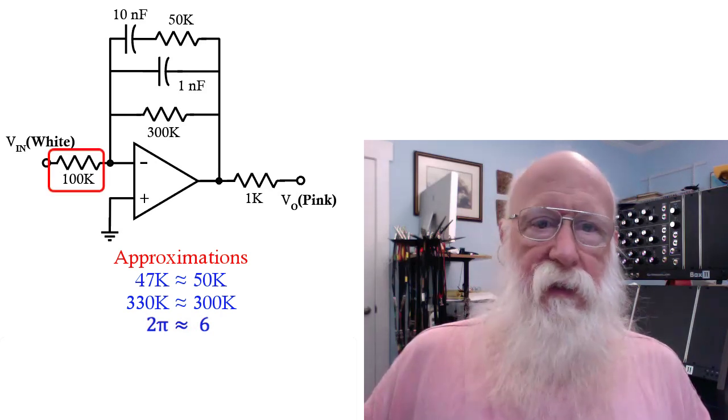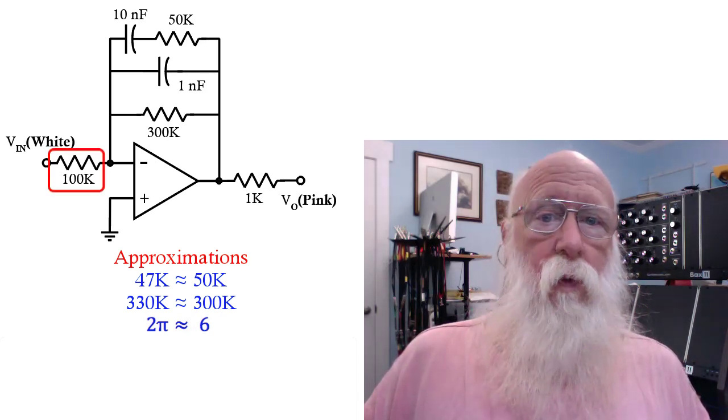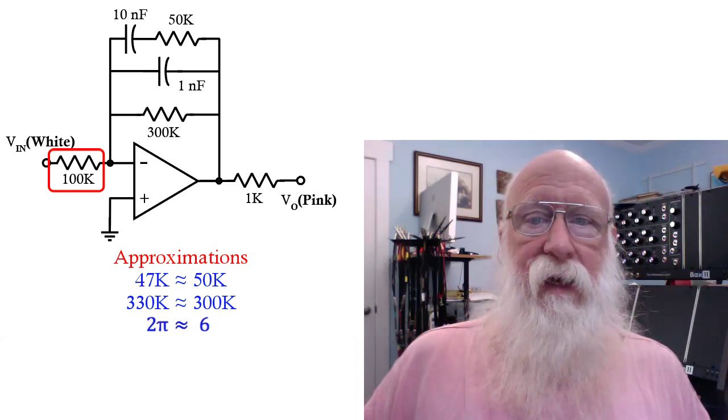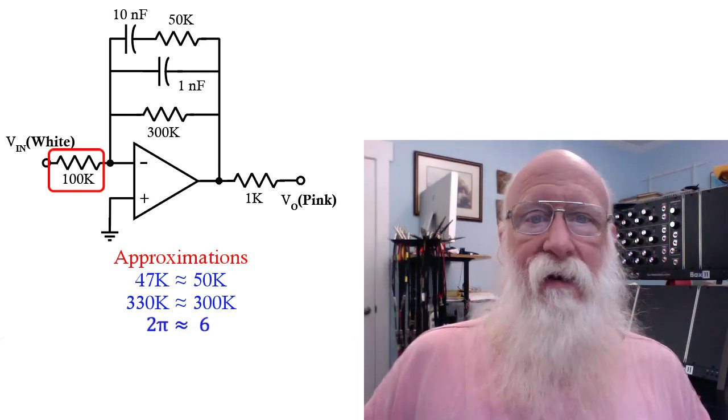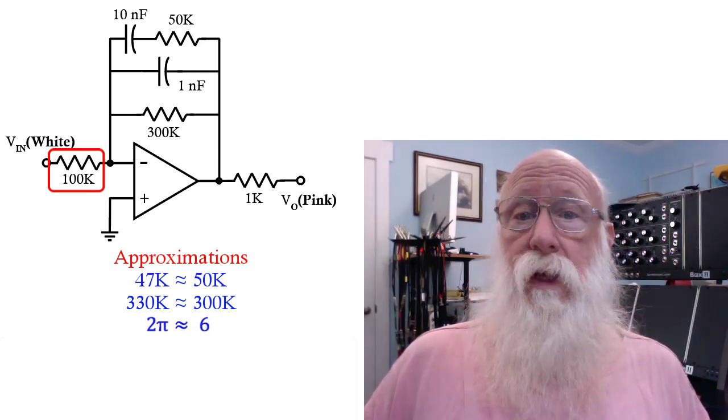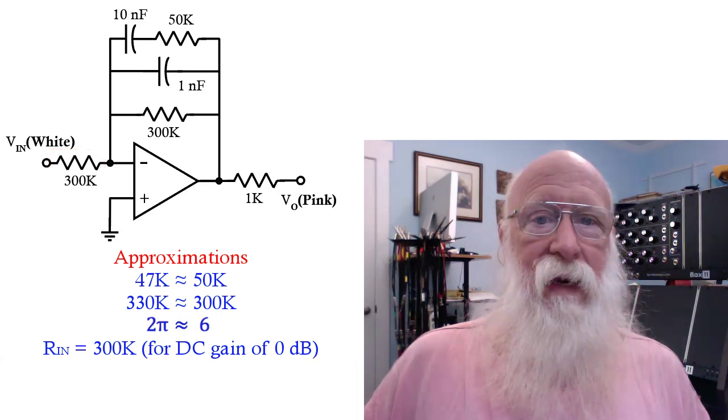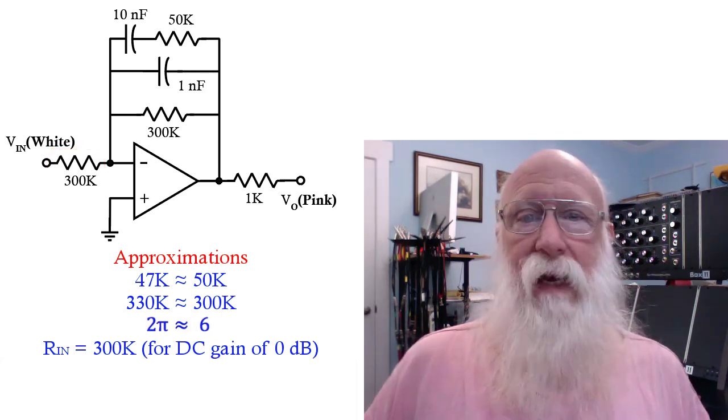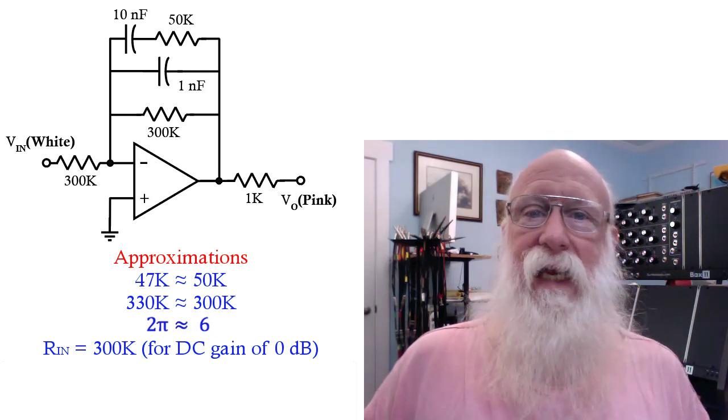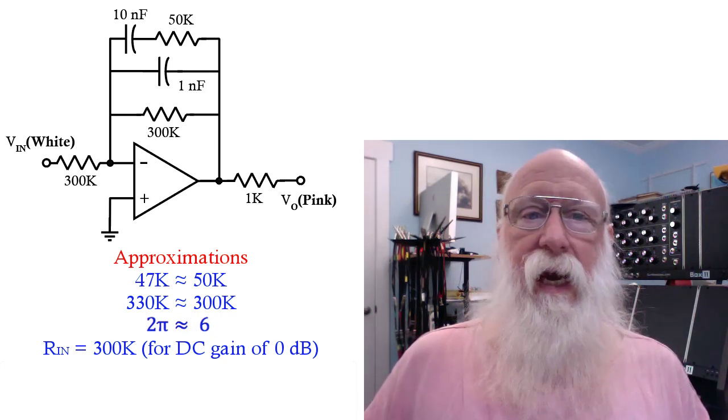For the input resistor, what I would really like would be a gain of 1 or 0 decibels at DC. So I'm going to change that 100K input resistor to 300K to match the impedance of the feedback network at DC. That doesn't really affect the way the filter works. It just makes it easier to compare the DC gain to gain at higher frequencies.